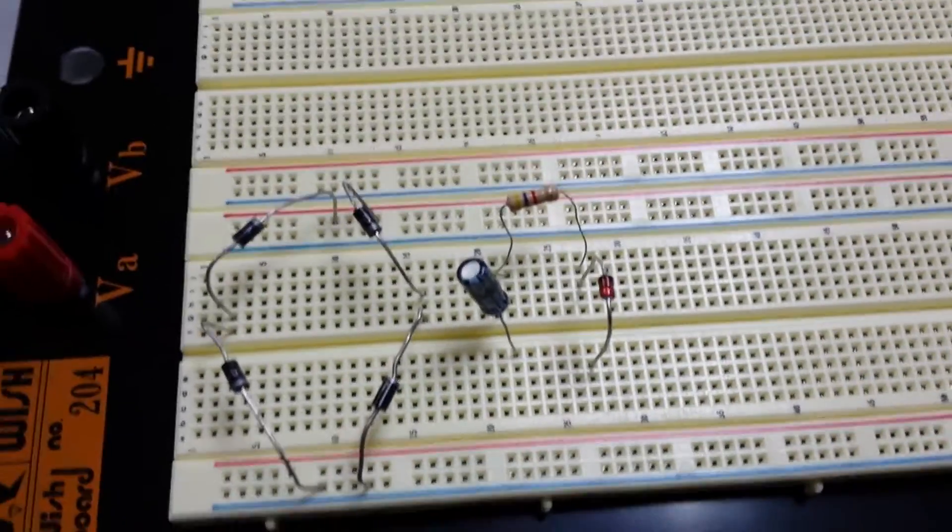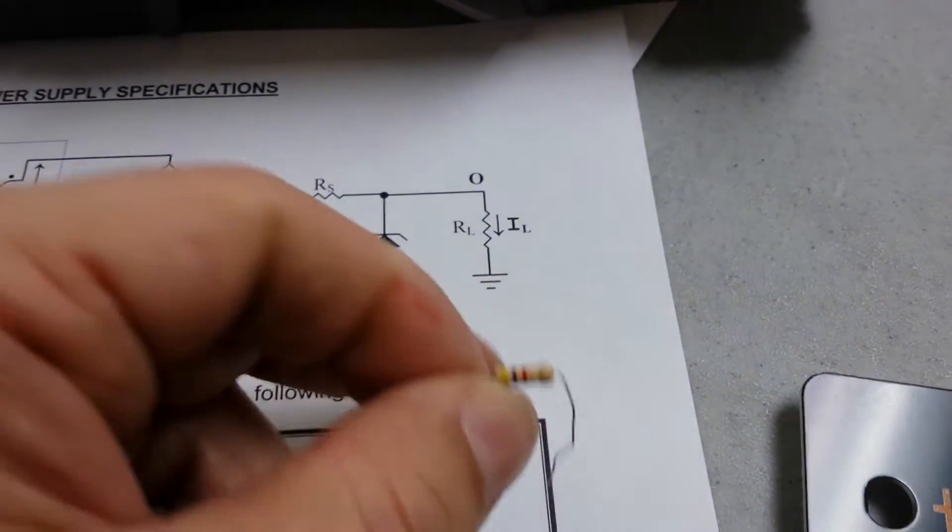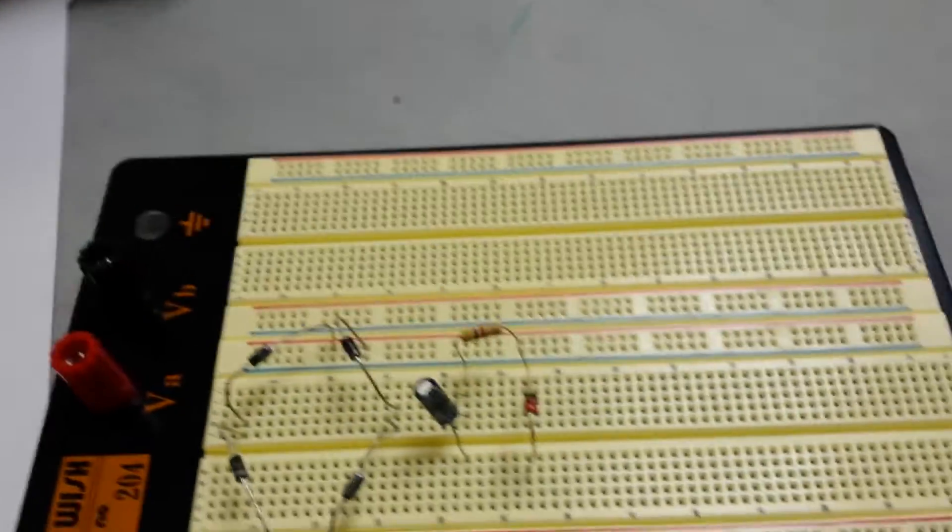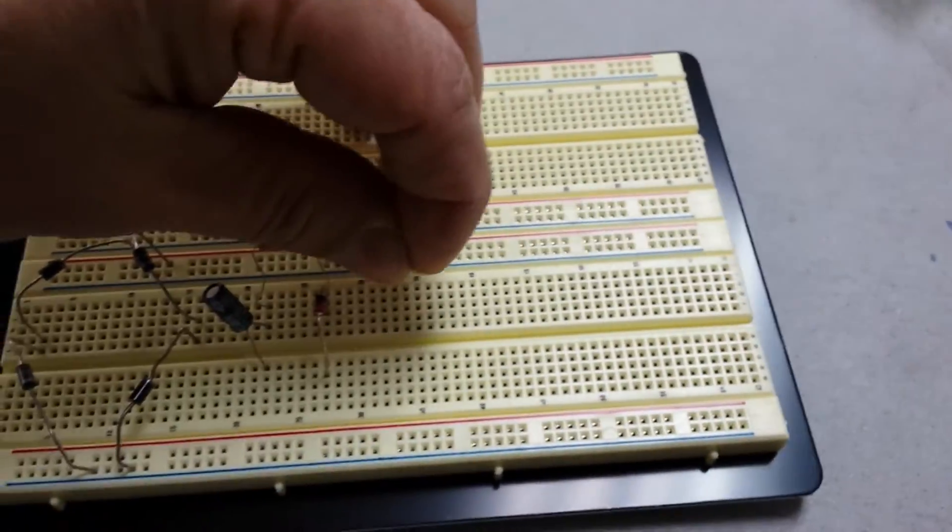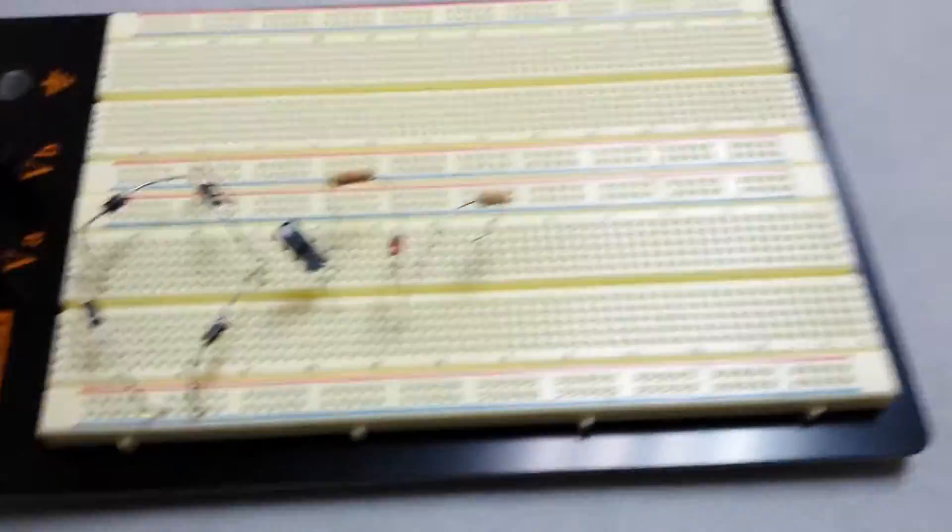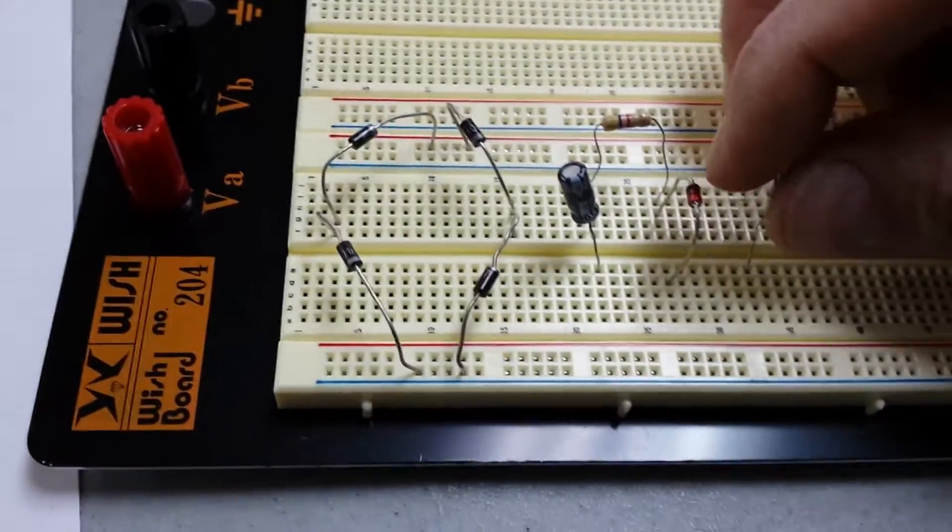We're going to add the RL resistor, so the load resistor on the right hand side. We'll just move it a little bit toward the right of the circuit.